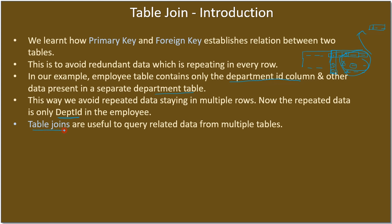Table joins are useful to query related data from multiple tables. The data is related by means of the ID — the foreign key department ID refers to the primary key department ID in the department table. This way, if I know the ID, I can go back and retrieve other information like department name, department head, and all those details.